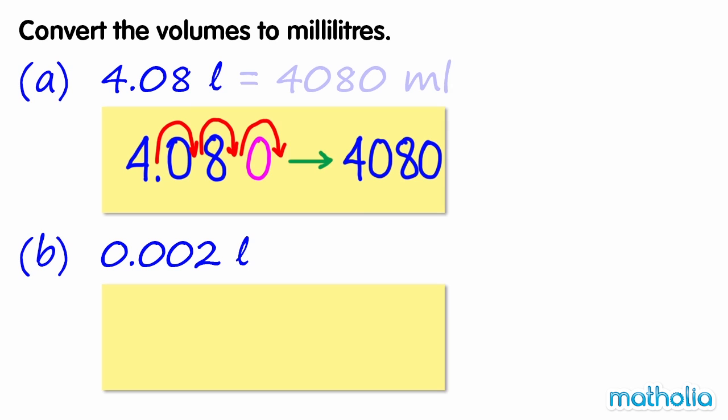4.08 litres equals 4080 millilitres. B: 0.002 litres.